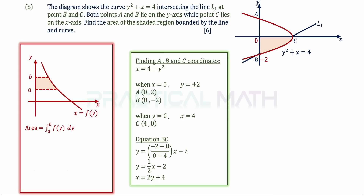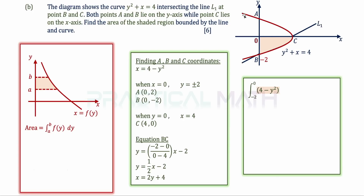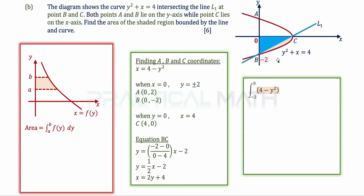Integrating the curve equation from -2 to 0 gives the large peach-colored region. Subtracting the integral of the L1 equation (x = 2y + 4) from -2 to 0 gives the blue triangle area bounded by the y-axis and L1. Taking the curve integral minus the L1 integral from -2 to 0 yields the required shaded peach region.